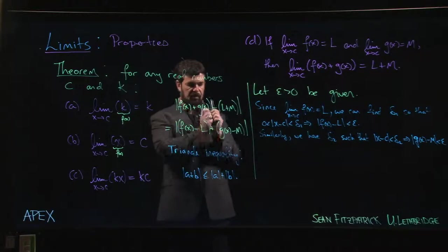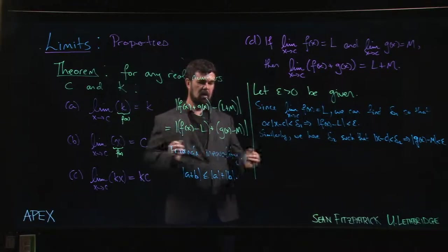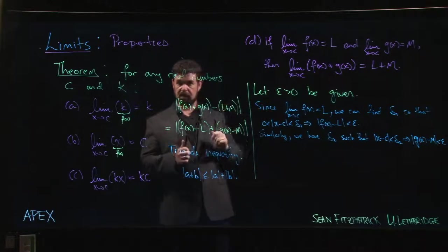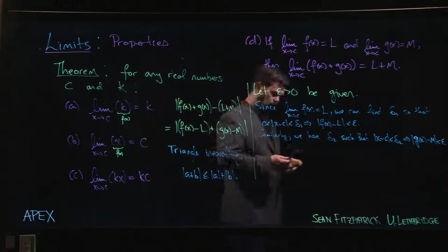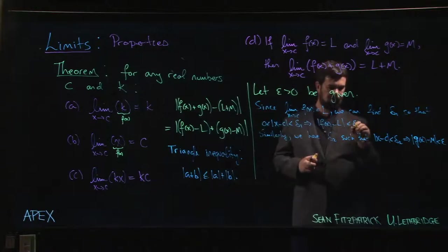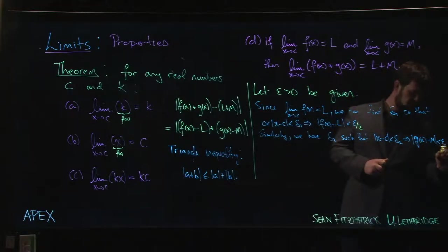Except that's not quite going to work because we're going to have the absolute value of this plus the absolute value of that; we want the two of them to add up to something that's less than epsilon. So in fact what we do is we don't want this just less than epsilon; we actually want it less than epsilon over 2. Same thing here: epsilon over 2.